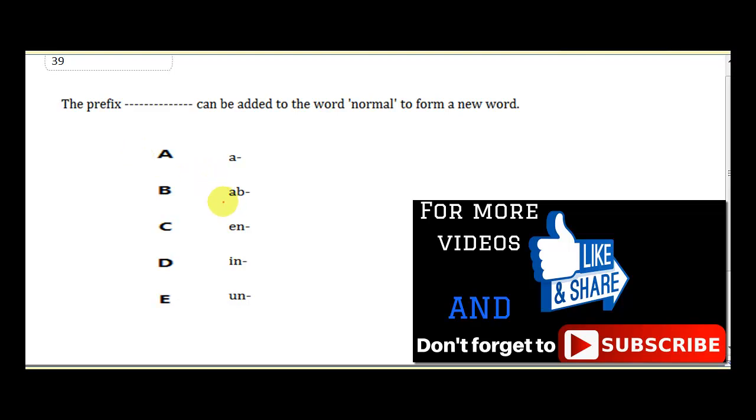So we have A, normal; B, abnormal; C, and normal; D, in normal; and E, on normal. It is abnormal. That is the right prefix here. Abnormal. If you add the letters A and B to normal, it gives us abnormal, and that is the opposite of normal. Okay?